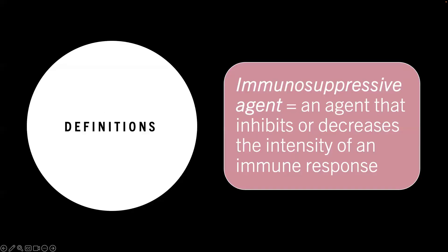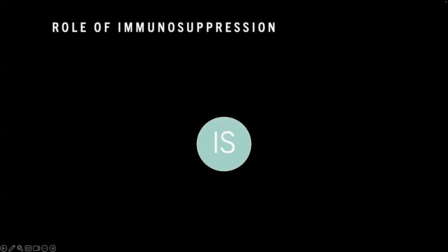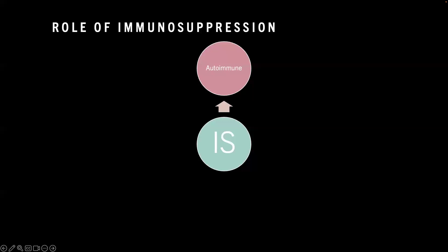A few basic definitions to start off with. What is an immune suppressive agent? It's really a drug that inhibits or decreases the intensity of an immune response. Where do we use immune suppression? Particularly where we've got autoimmune diseases and where that immune response is damaging and we are trying to suppress it.